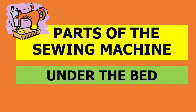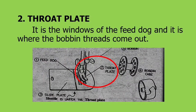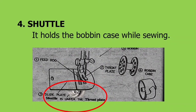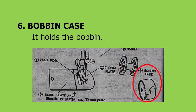And lastly, the parts of the sewing machine under the bed. First, feed dog: it moves the fabric while sewing. Two, throat plate: it is the window of the feed dog and it is where the bobbin thread comes out. Three, slide plate: it is a movable plate that covers the shuttle and bobbin case. Four, shuttle: it holds the bobbin case while sewing. Five, bobbin: it is a metal spool for winding thread. And lastly, the bobbin case: it holds the bobbin.